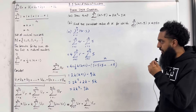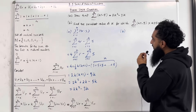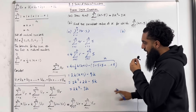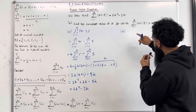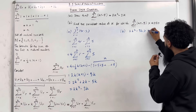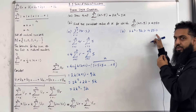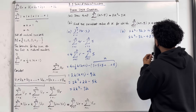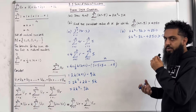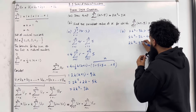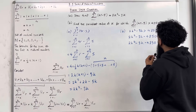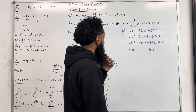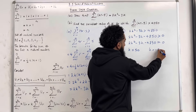Moving on to part B of the exam-style question: find the smallest value of K for which this summation is more than 4,850. We know that this summation simplifies to 2K squared minus 3K, so I can write 2K squared minus 3K > 4,850. Taking 4,850 to the left-hand side: 2K squared minus 3K minus 4,850 > 0. I need to solve 2K squared minus 3K minus 4,850 equals 0 to find the critical values. There are two solutions: K equal to 50 and K equal to minus 97 over 2.